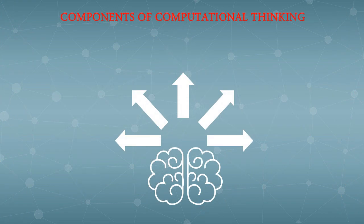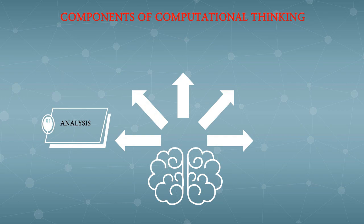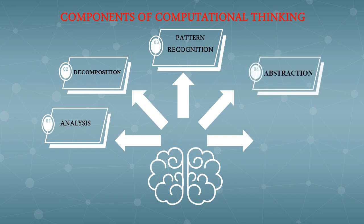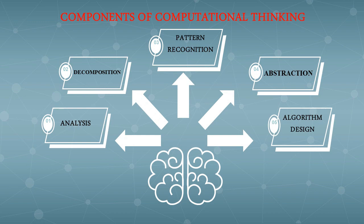Now let us discuss the components of computational thinking. There are five components: 1. Decomposition, 2. Pattern Recognition, 3. Abstraction, 4. Algorithm Design. We are going to study these five components individually, starting with analyzing the problem.